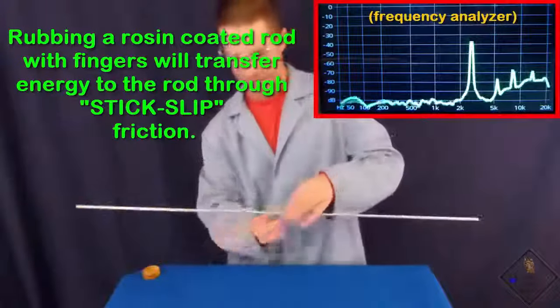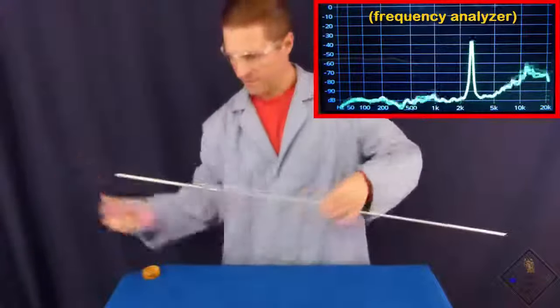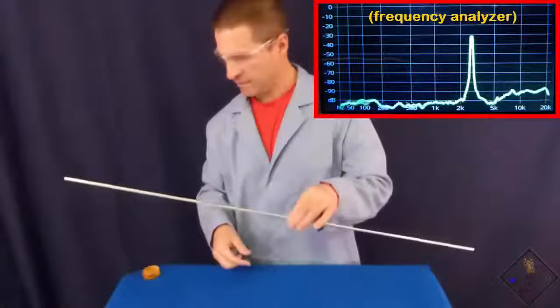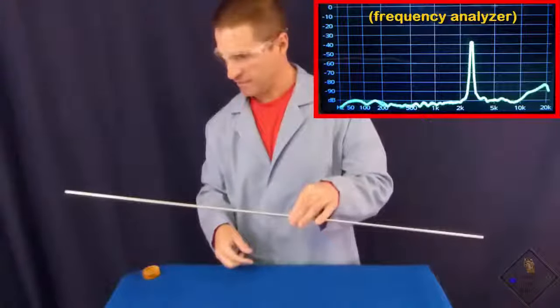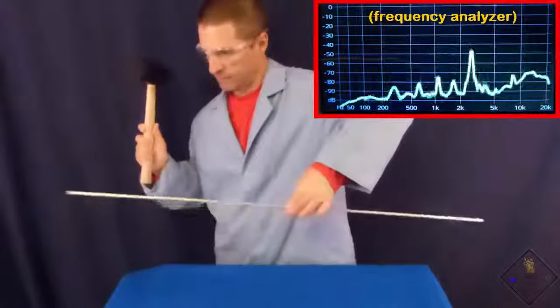Holding the rod at its center, stick-slip friction transfers energy to the rod and the rod resonates at its natural frequency. Resonance can also be achieved through striking the rod with a mallet.